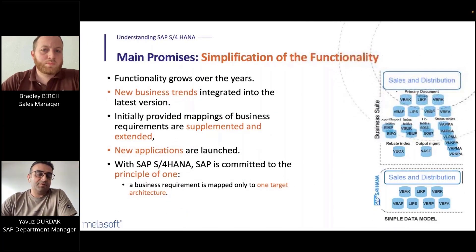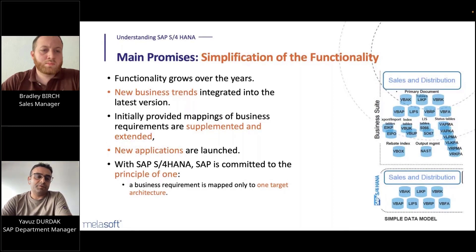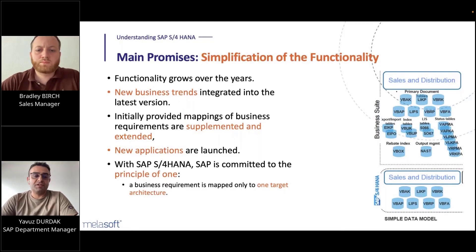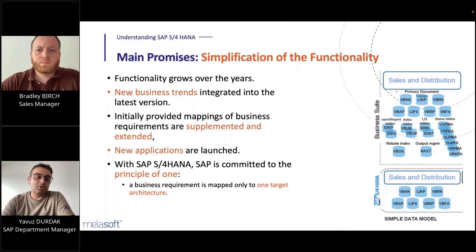The first main promise of SAP is the simplification of functionality. With the advancement of technology, business and functionality requirements have grown over the years. To match new business trends, integrated solutions are needed. SAP initially provided supplemental and extended solutions, and new applications were developed to catch up with these requirements. With SAP S4 HANA, SAP is committed to the principle of one — meaning a business requirement is met by only one target architecture.